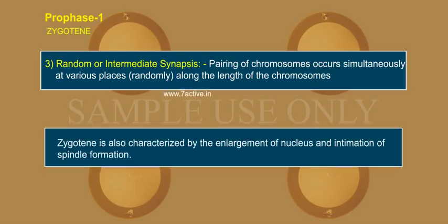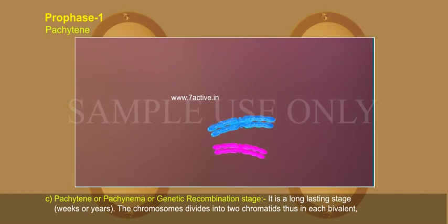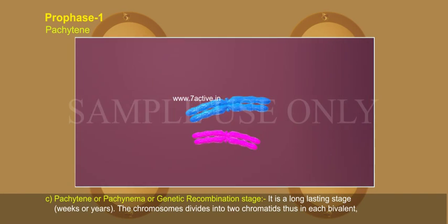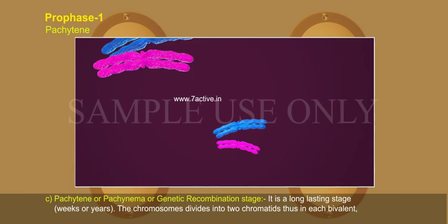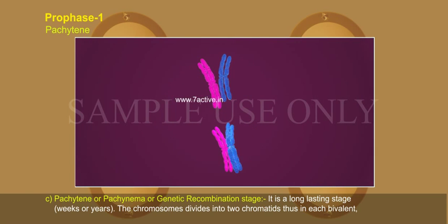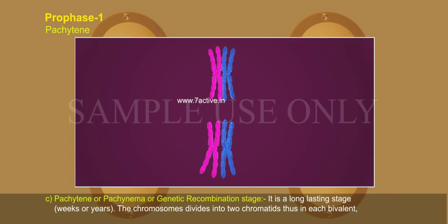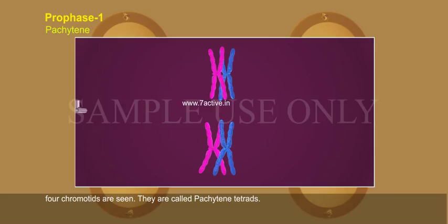Zygotene is also characterized by the enlargement of the nucleus and initiation of spindle formation. C. Pachytene or Pachynema — the genetic recombination stage. It is a long-lasting stage, lasting weeks or years. The chromosome divides into two chromatids; thus in each bivalent, four chromatids are seen. They are called pachytene tetrads.